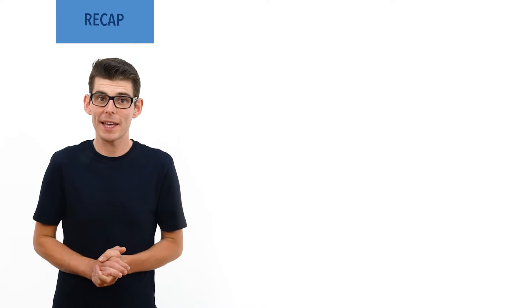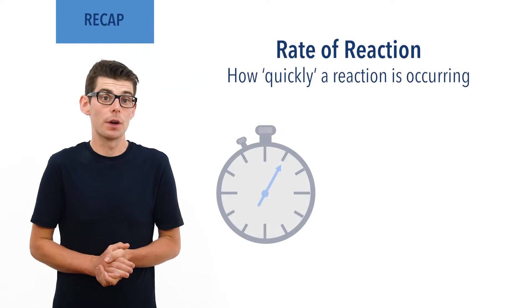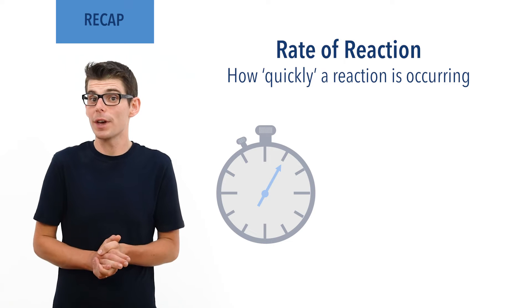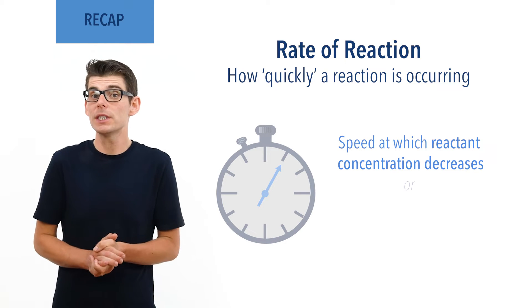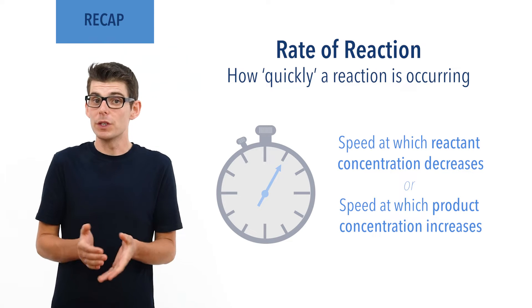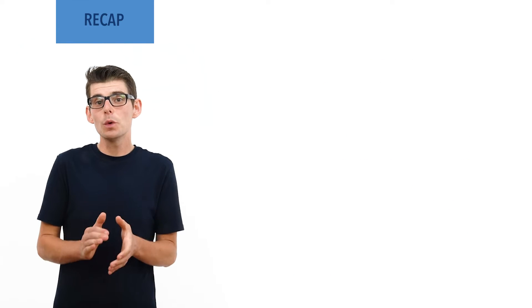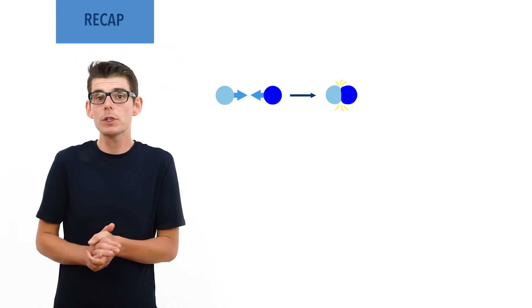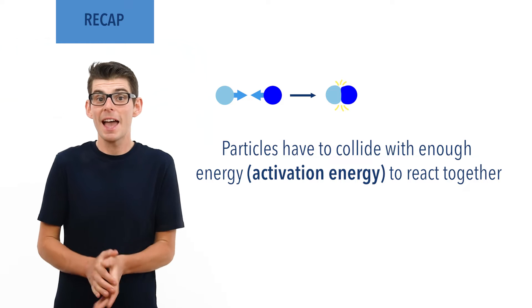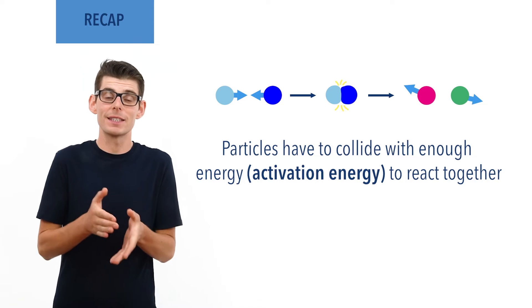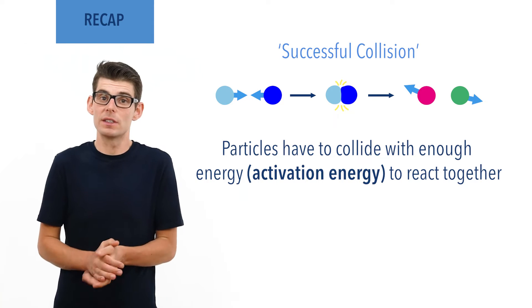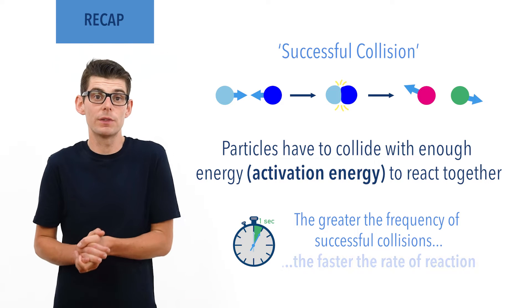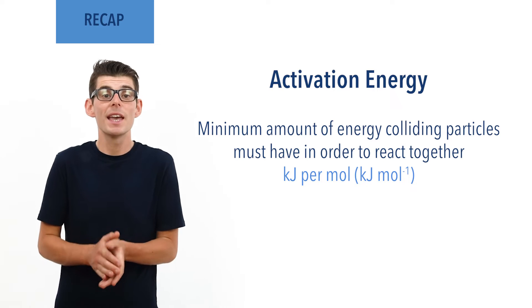Before we talk in detail about catalysts, there are a few essential ideas you need to be comfortable with. Rates of reaction describe how quickly reactions are occurring. They can be measured in terms of the speed at which reactant concentration decreases, or the speed at which product concentration increases, giving the units moles per decimetre cubed per second. In order for a reaction between two substances to occur, particles of each must collide together. If a collision between the two happens with enough energy — the activation energy — and leads to the formation of new products, the collision is described as successful. The greater the frequency of these successful collisions occurring per second, the faster the rate of a reaction. Activation energy refers to the minimum amount of energy that particles must collide with in order for a reaction to occur.